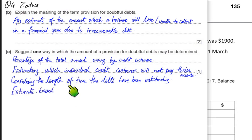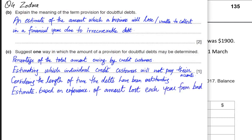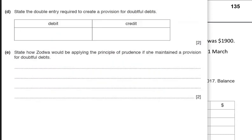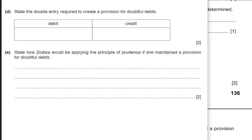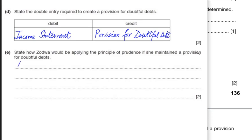In this question we just need to write one way. Another method is an estimate based on experience — experience of the amount lost each year from bad debt, which is basically an estimate by management of how much debt would turn bad in the future. For part D, the entry required to create a provision: if creating a provision for the first time, it is an expense, so income statement would be debited and provision for doubtful debt account would be credited.